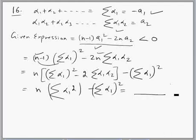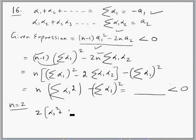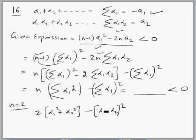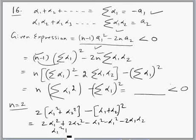To understand how to use the fact that the expression is less than zero, we take n equals 2. If n is 2, this expression is 2 times (α₁² plus α₂²) minus (α₁ plus α₂) whole squared. Expanding, we get 2α₁² plus 2α₂² minus α₁² minus α₂² minus 2α₁α₂, which simplifies to α₁² plus α₂² minus 2α₁α₂, which is (α₁ minus α₂) whole squared.